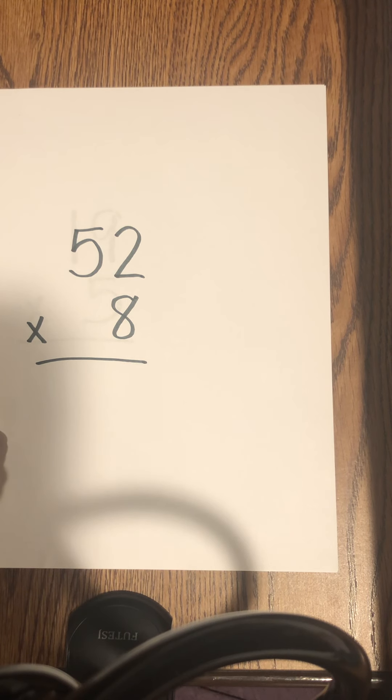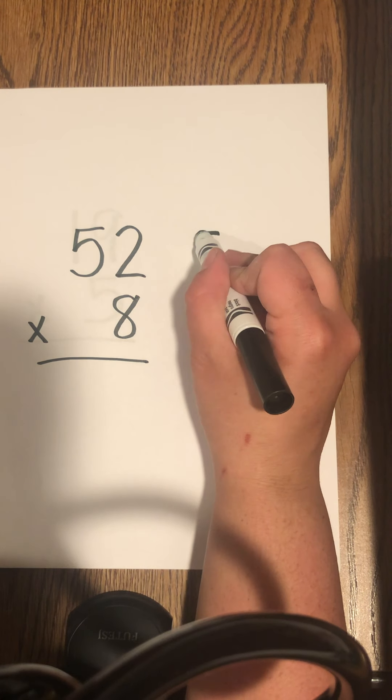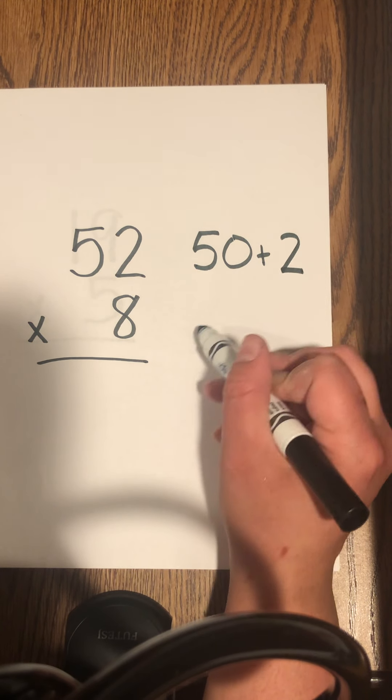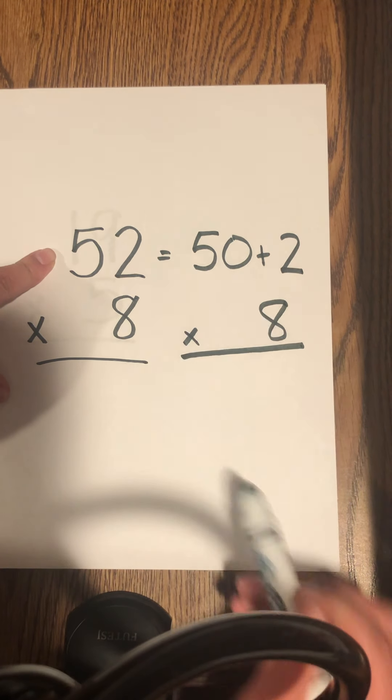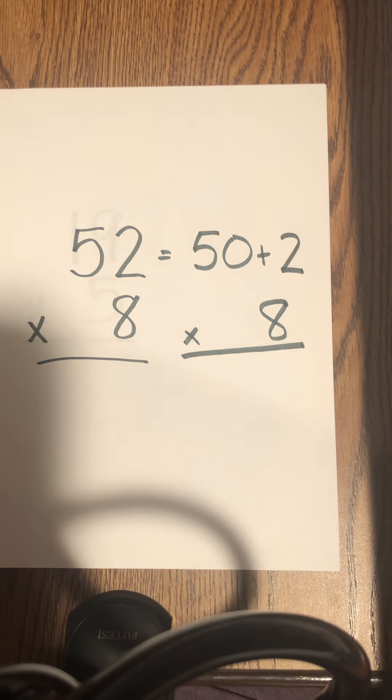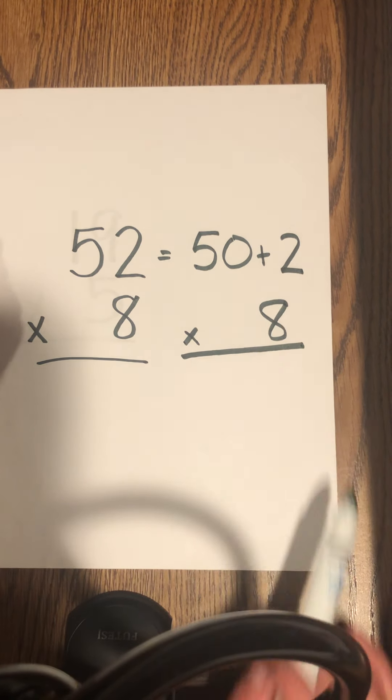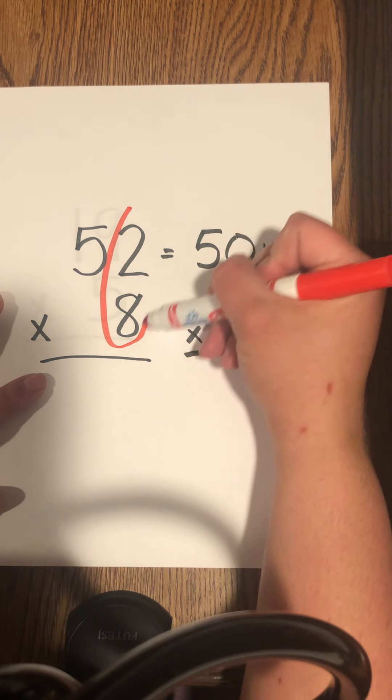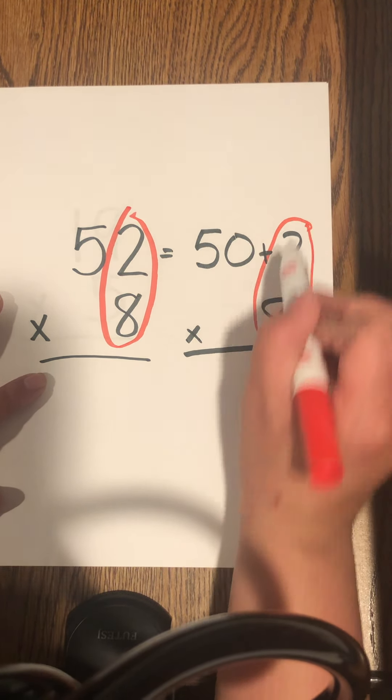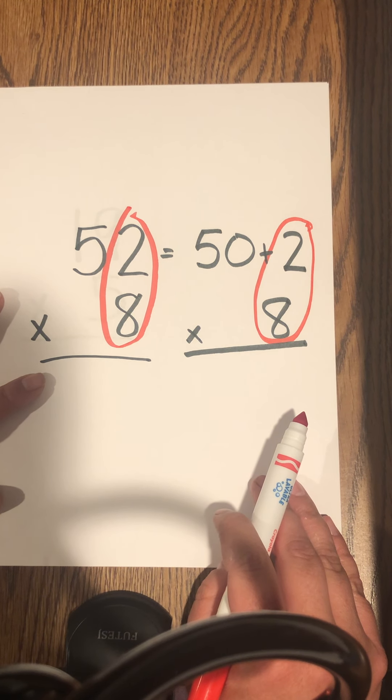All right, we have 52 times 8. So let's think about what this also could look like. 50 plus 2 times 8, because 52 is equal to 50 plus 2. So 52 is equal to 50 plus 2. So now, making sure I got my colors right, I started with red. All right, so I'm going to start here, and 2 times 8 is 16.